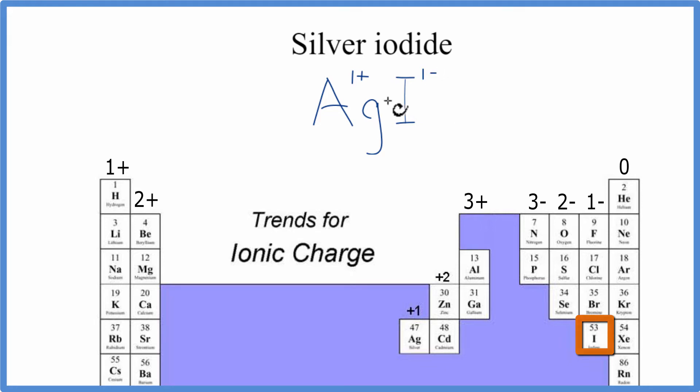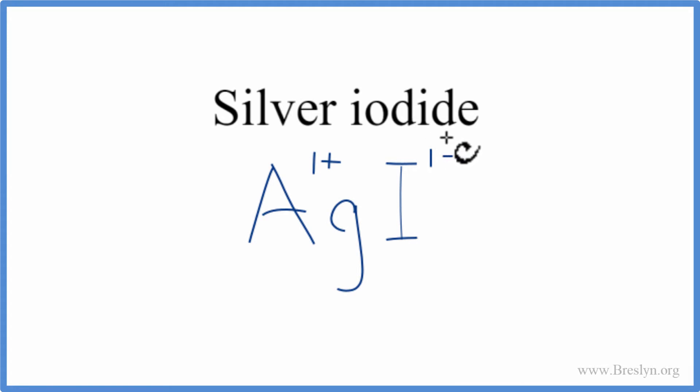Iodine, 1 minus. So these charges need to add up to 0 to have a neutral compound. Silver iodide is a neutral compound.